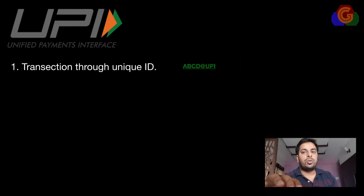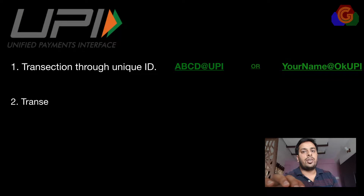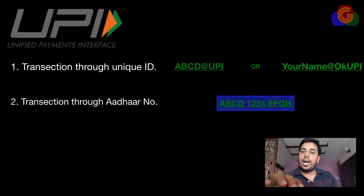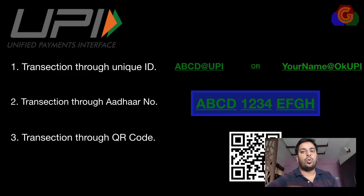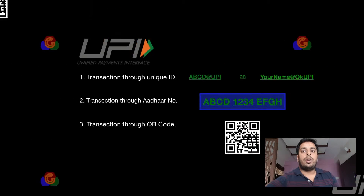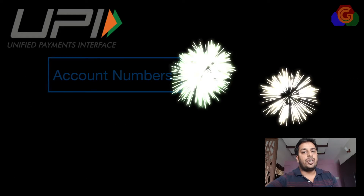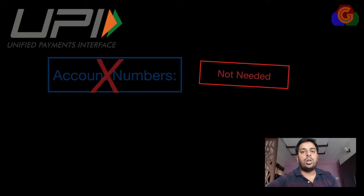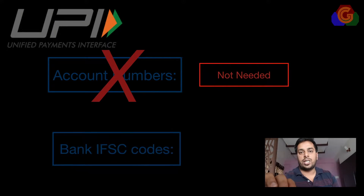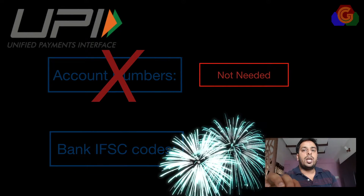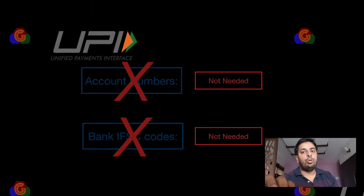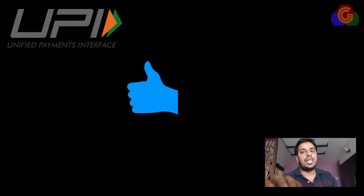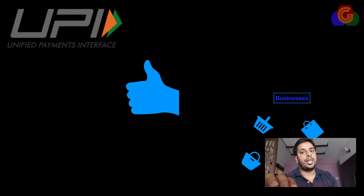For the first time we were actually able to do an interbank transfer by just entering a unique ID, or by entering an Aadhaar number, or just by scanning a QR code through a mobile phone. People were no longer required to add a beneficiary, enter an IFSC code, and add account numbers to do a simple bank-to-bank transaction. Because of this ease of use, people have started accepting wallet and UPI-based payments as a very viable option for conducting business.